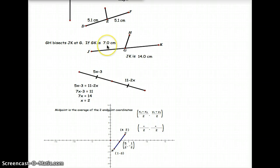If GK is 7 centimeters, so GK is 7, JG must be 7 because JK is 14.